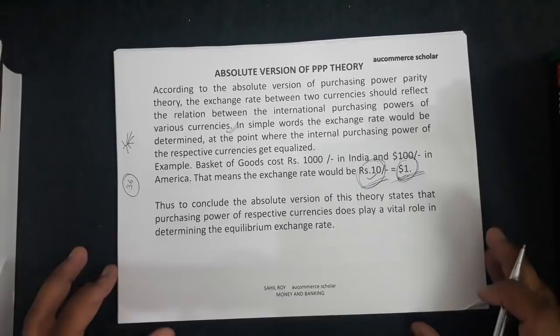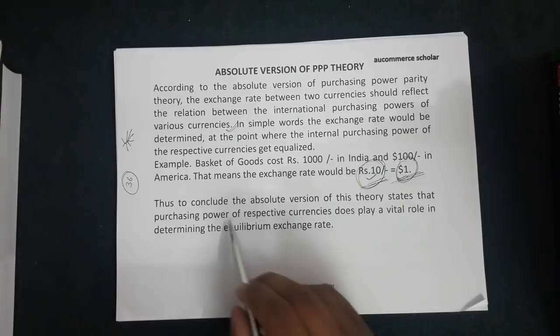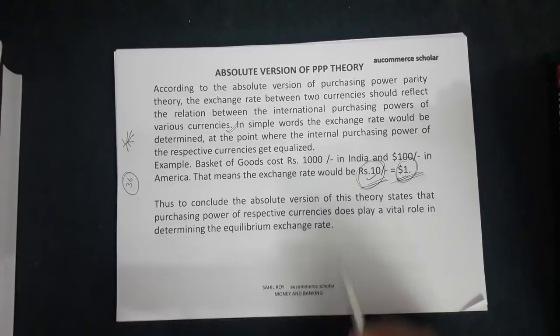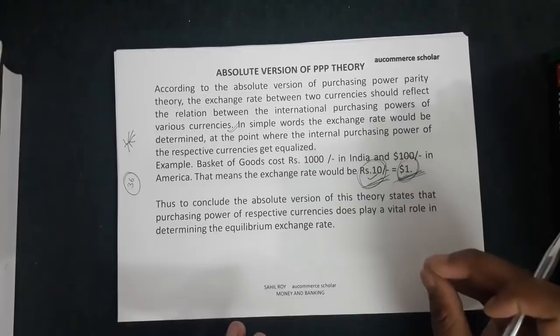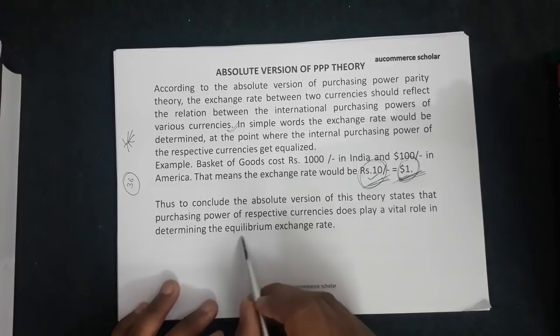To conclude the absolute version: it states that the purchasing power of respective currencies does play a vital role in determining the equilibrium exchange rate. The absolute version of PPP theory tells us that the purchasing power of a country's own currency at the domestic price level is a very important factor in determining the equilibrium exchange rate.